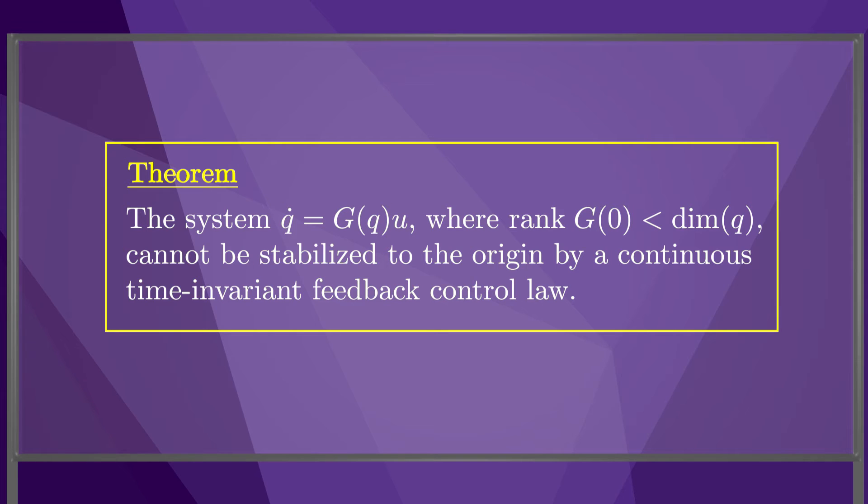The system Q dot equals G of Q times U, where the rank of G of zero is less than the dimension of Q, cannot be stabilized to the origin by a continuous time-invariant feedback control law.